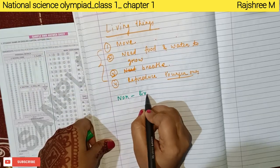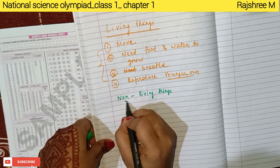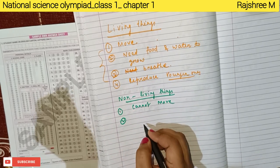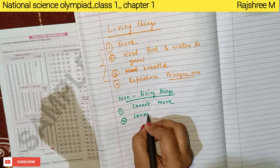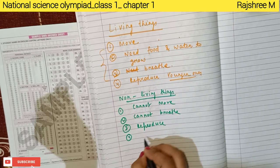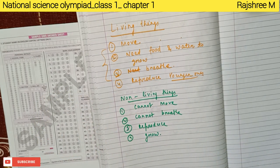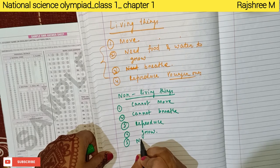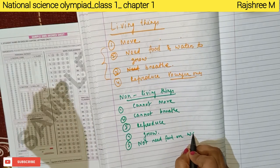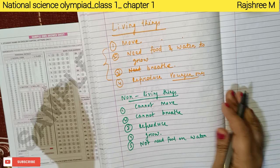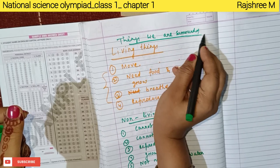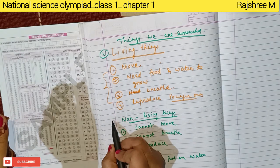Non-living things are those things which cannot move, cannot breathe, cannot reproduce, and they don't need food or water. These are the things which surround us — living things and non-living things.